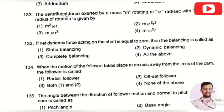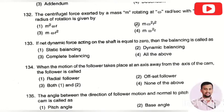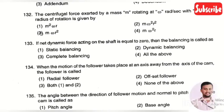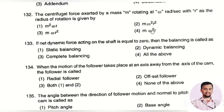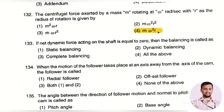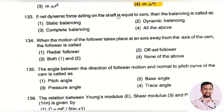The next question: the centrifugal force exerted by a mass m rotating at angular velocity omega with r as radius of rotation is given by — option 1: m²ωr, option 2: mω²r², option 3: mωr², option 4: mω²r. The right answer is option 4, that is mω²r.